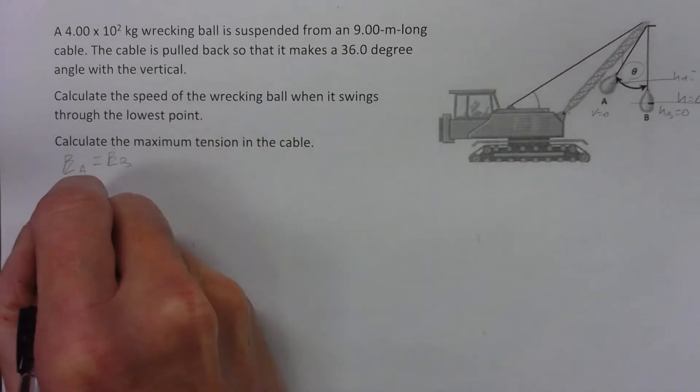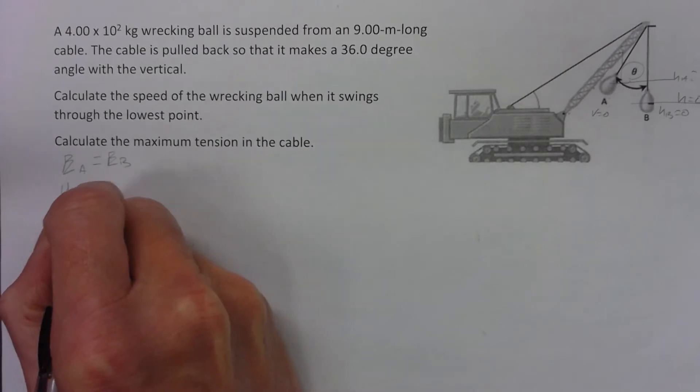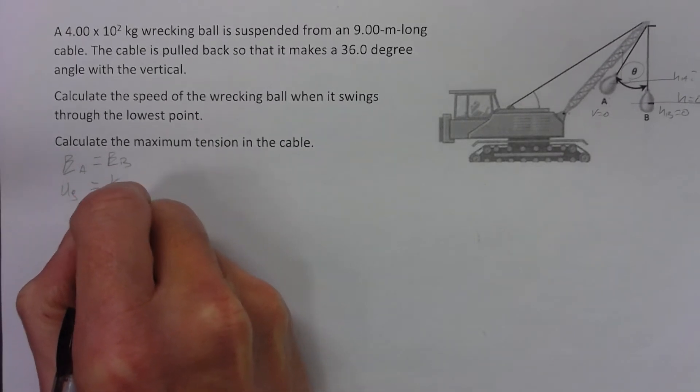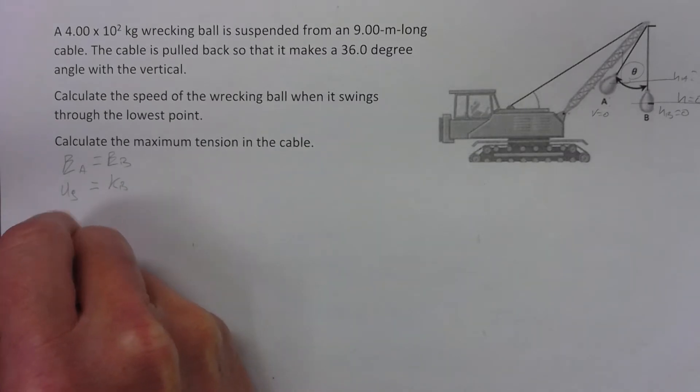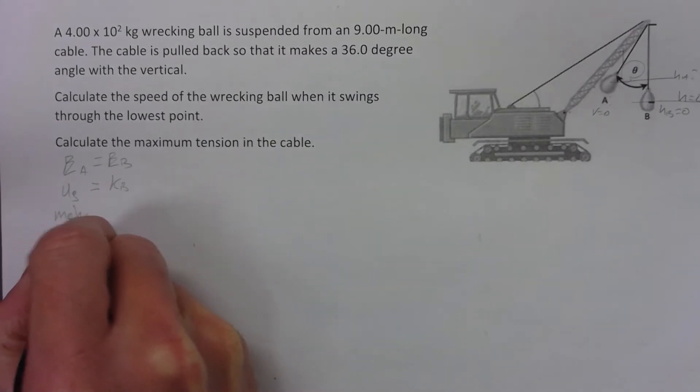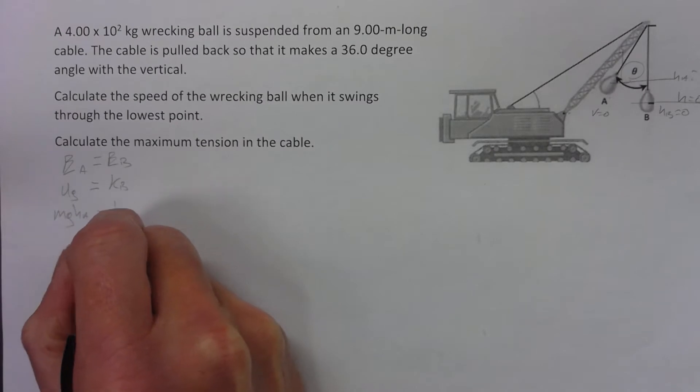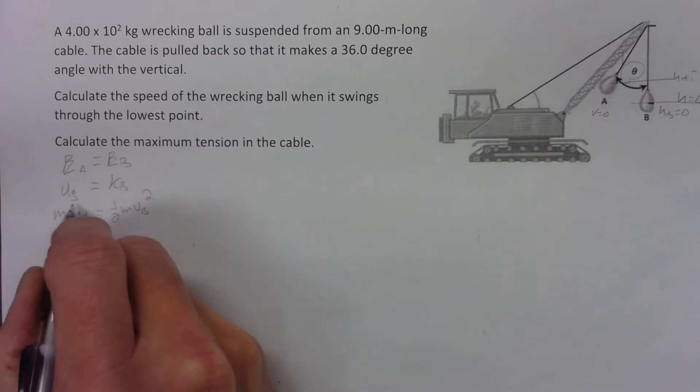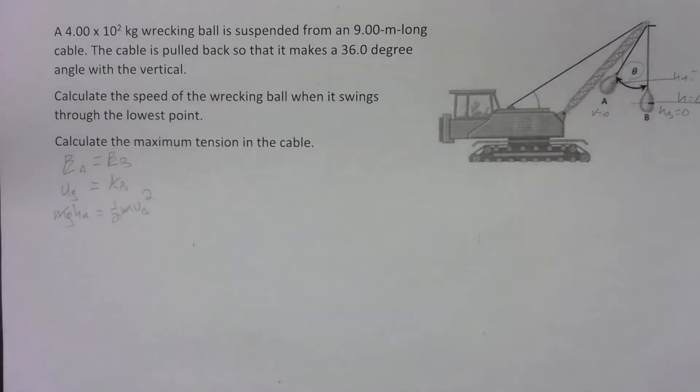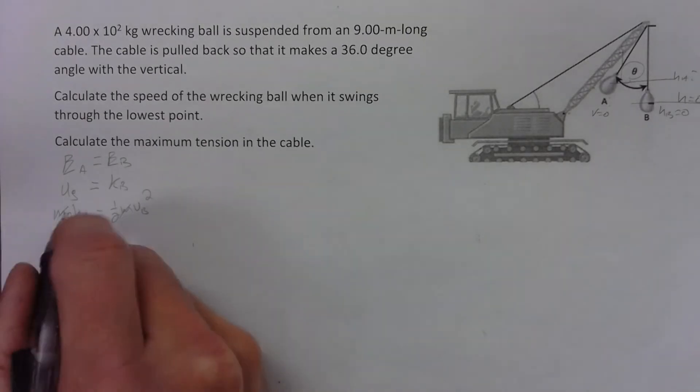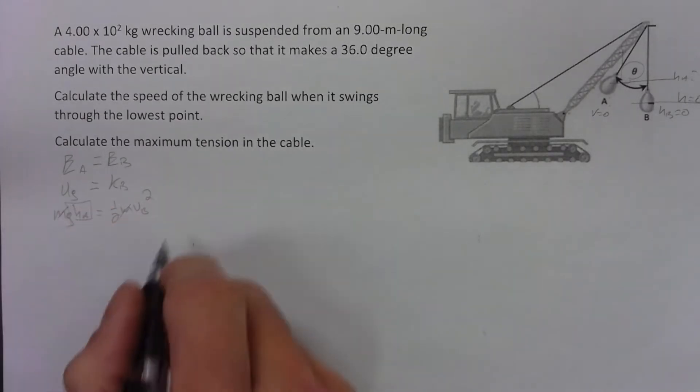So potential energy of gravity at A, that's all we got, going to turn into kinetic energy at B, that's all we got there. So that's mgh at A, it's going to equal one-half mv at B squared. So as often happens in these simple energy problems, the mass is not going to make a difference. That mass is on both sides, but we need to figure out this h_a, how high that is right there.